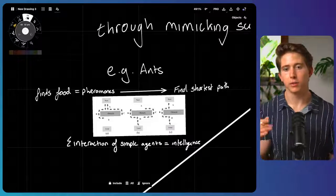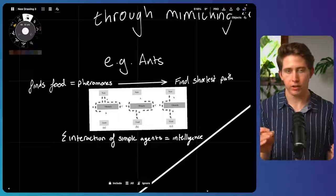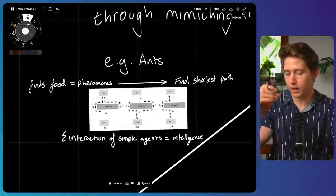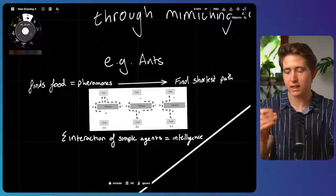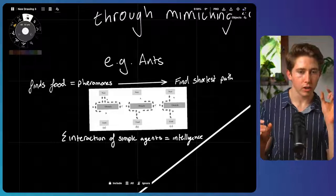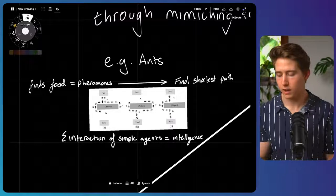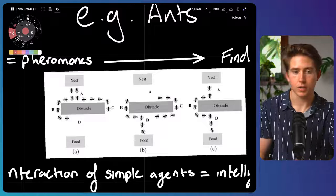A simple example of a swarm in biological life are ants. An ant colony is comprised of lots of very small, simple organisms. Individual ants, which follow very, very simple rules. They don't actually think that much for themselves. However, the combination of lots and lots of very simple ants can actually do very complicated tasks.